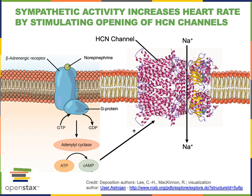Here we see the mechanism through which the sympathetic nervous system stimulates an increase in heart rate by activating HCN channels. Norepinephrine released by postganglionic sympathetic fibers binds to beta-adrenergic receptors in the SA node, activating the G protein that activates adenylyl cyclase. Adenylyl cyclase produces the second messenger cyclic AMP, which binds to HCN channels, allowing more sodium to enter the cell during the pacemaker potential. This increases the slope of the pacemaker potential, causing the membrane potential to reach threshold faster, stimulating an increased heart rate.